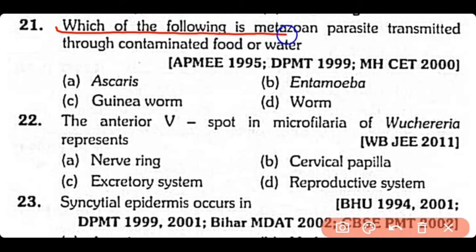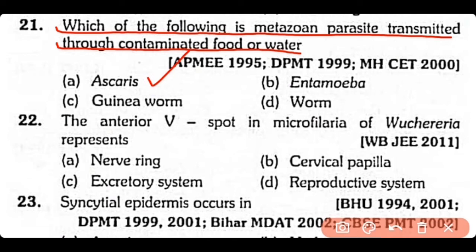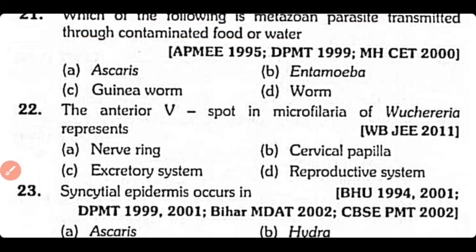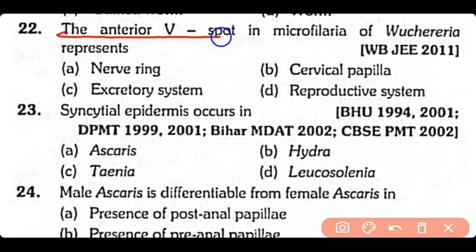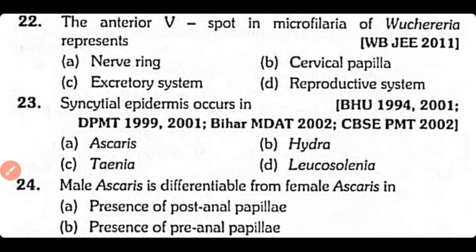Question 21: Which of the following is a metazoan parasite that is transmitted through contaminated food or water? Question 22: The anterior V-spot in microfilaria of Wuchereria represents the excretory system. The correct answer is Option C.